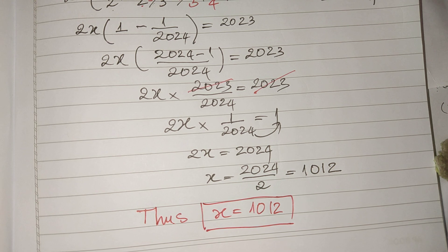So now we get the value of h equals 1012 as our solution. Thank you for watching. If you like my videos please don't forget to subscribe to my channel for more exciting videos. Goodbye, see you in the next video.